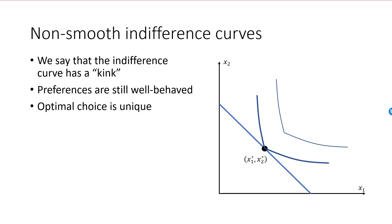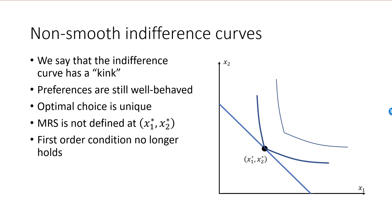However, the derivative of the indifference curve, and therefore MRS, is not defined at the kink. Imagine adding a tangent to the indifference curve at the kink — there is simply no unique way of doing that. Since we have no MRS, we have no first-order condition, and the basic strategies of finding the optimal bundle will fail. In the next slide, we will look at an example of how to find the optimal choice in this type of situation.